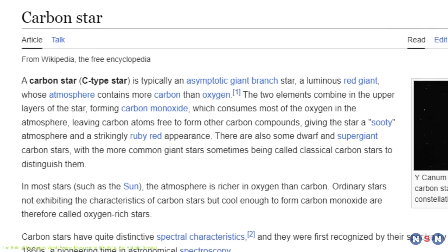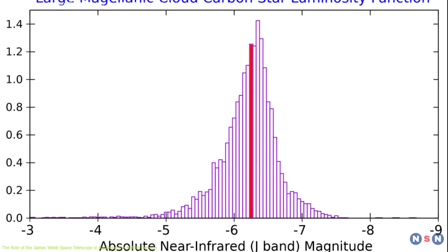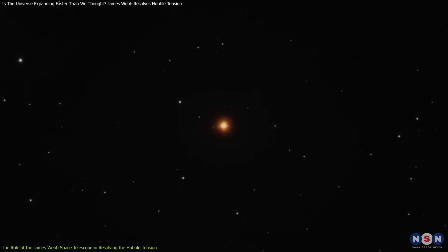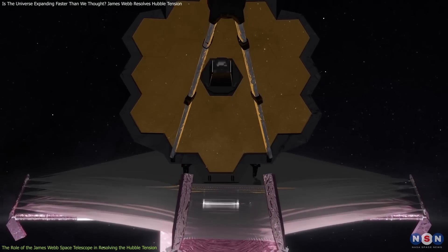The third method involves carbon stars, which are characterized by their consistent brightness in the near-infrared spectrum, making them excellent candidates for distance measurements using Webb's infrared capabilities.